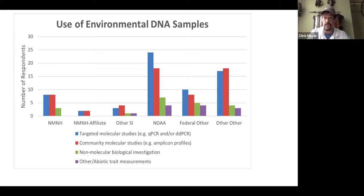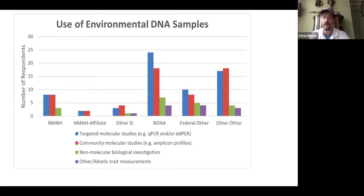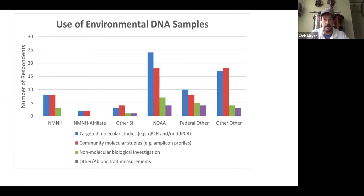We also asked what people are doing with these samples. It's about 50-50 between amplicon-based versus targeted molecular studies. We'd like to take the targeted molecular ones and do amplicon to create an incredible map of ocean life, and vice versa — people might want to take the community census and mine those in the future for an invasive species latent occurrence record or something like that.